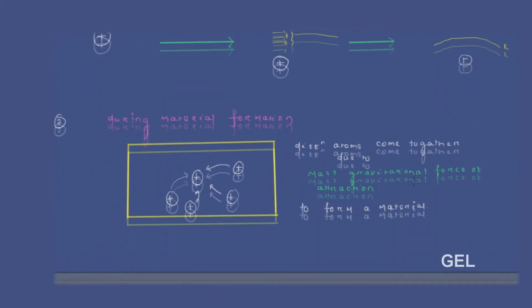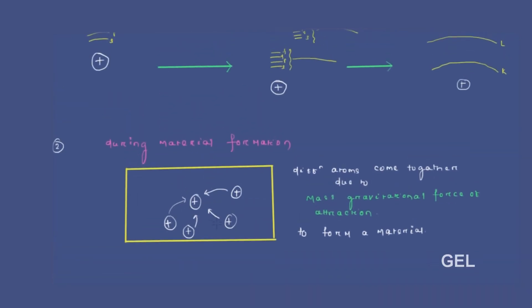Moving on — what are we going to do? We will form a material. In order to form a material, how does a material get formed? When different atoms are close to one another, that means different atoms' nuclei are close to one another. When there are different nuclei of any atom that come together, at that point we can say material formation happens.